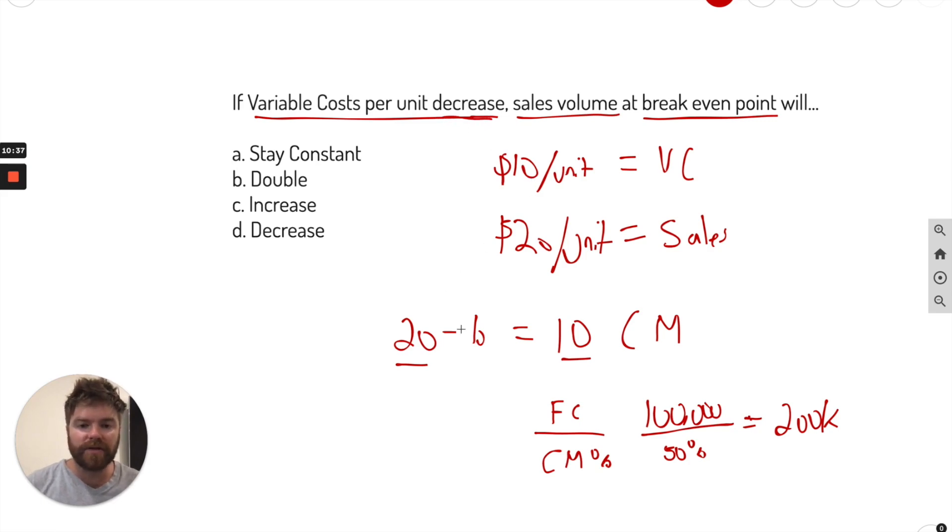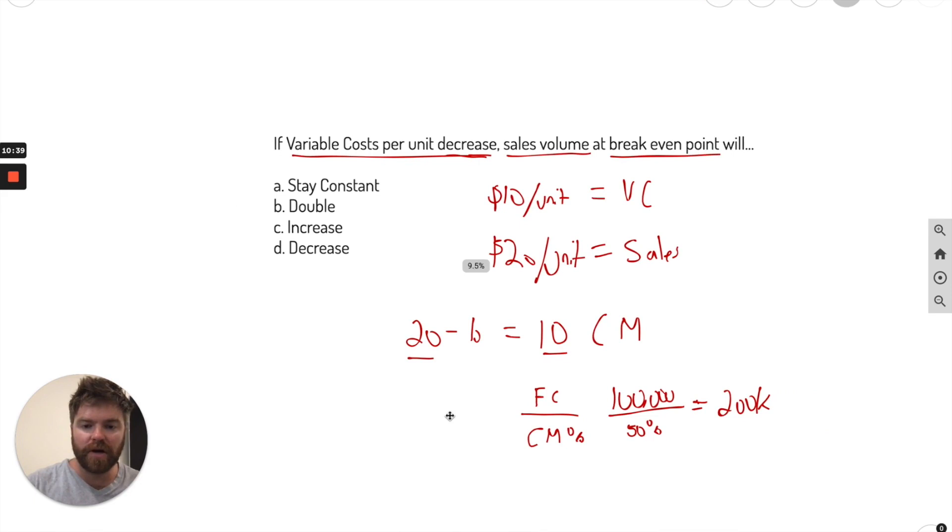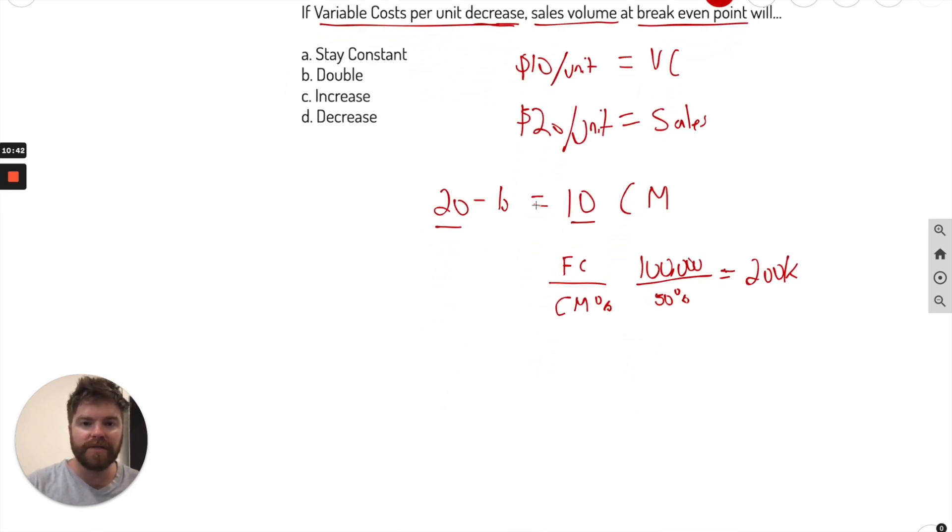So let's go ahead and create a new problem, but with it decreasing. Sales stay the same. So let's call it 20 for sales. Let's call it instead of 10 now, let's call it eight. It goes down. What's that going to equal? Well, your contribution margin is now 12. It went up. So what would be your percentage now? Well, 12 divided by the 20 for sales. So what happens there? 12 divided by 20, I get 60%. So actually, the percentage went up.